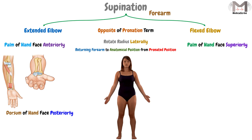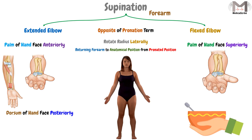If we supinate a flexed elbow, the supination of the forearm will make the palm face superiorly. An example is when we hold a bowl in our hand, so the forearm and the hand will be supinated. This is the meaning of supination, and that was almost everything about pronation and supination.